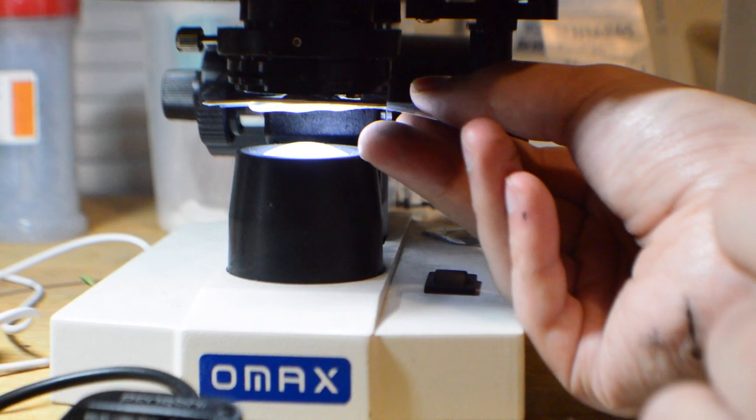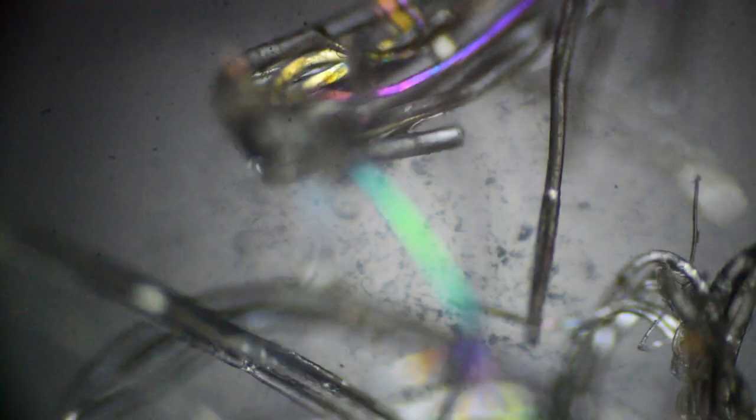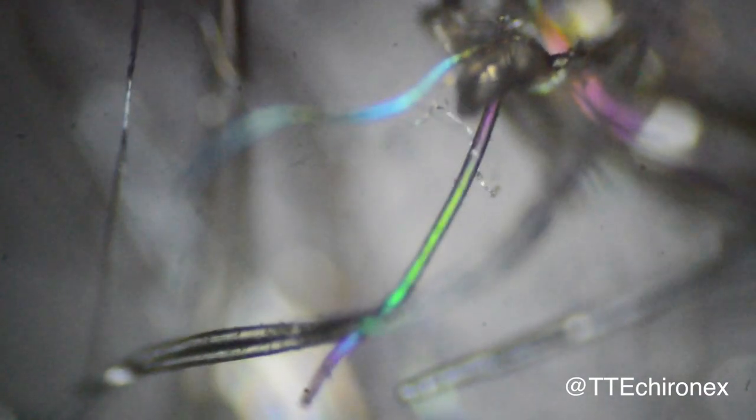So those are two simple mods you can make to a microscope to give all sorts of new functionality. I had a lot of fun filming this, as the colorful slides are really quite cool to look at. So if you've got a microscope, spend a couple of bucks on a set of polarizers and give this a try. If you do, send me your favorite images on Twitter, I'd love to see them.